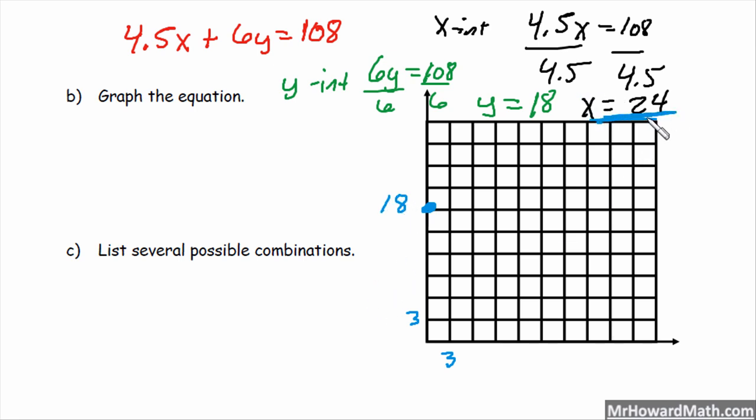My x-intercept is 24, and 24 divided by 3 is 8, so I need to go 8 spots: 1, 2, 3, 4, 5, 6, 7, 8. So there is my x-intercept at 24. We can graph our line in there, just like this.